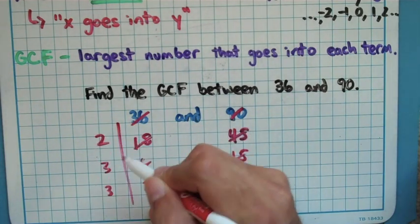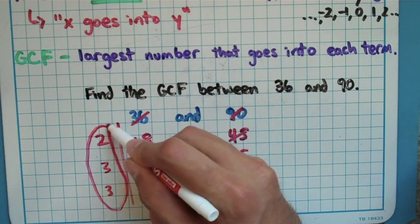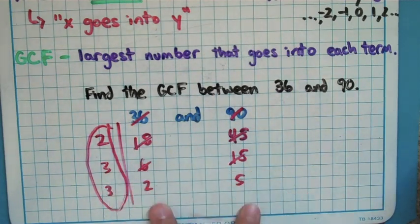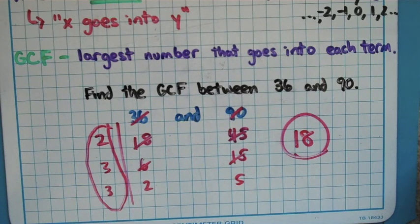The numbers I wrote on the outside here are going to be my answer. So I just multiply these together, and I get my answer. 2 times 3 times 3 is 18. My GCF on this one is an 18. I like this method because it's a surefire way to get the answer. If you just guess and check, this is actually one, a lot of people would say 9. It's very easily missed, but if you do this process, it's not bad.